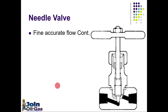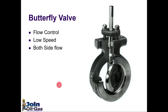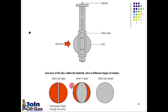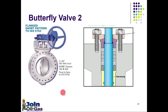Needle valves are used for fine control — if we need very accurate control then we will use a needle valve. Next is the butterfly valve, used for flow control, low speed, and both-side flow, meaning we can get flow from either side. Here you can see various views of the butterfly valve showing how it moves: fully open, semi open, and fully closed.